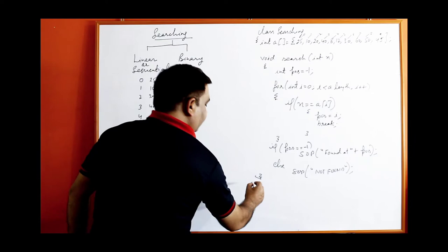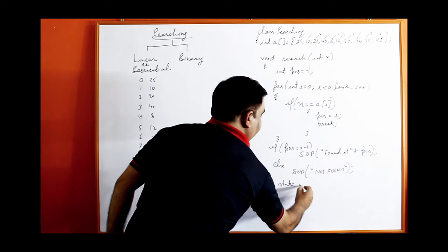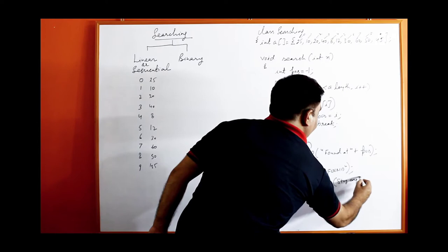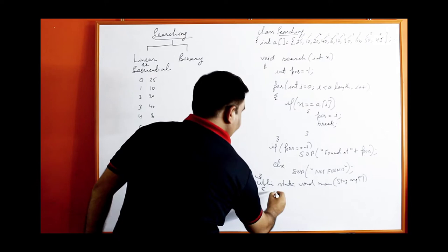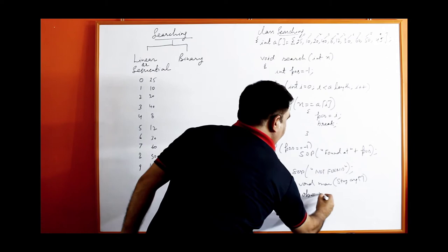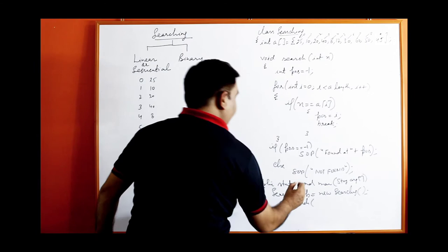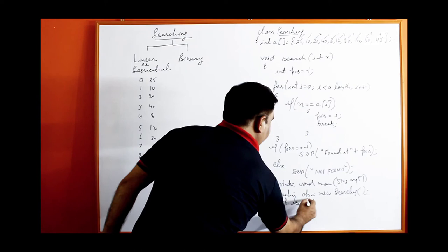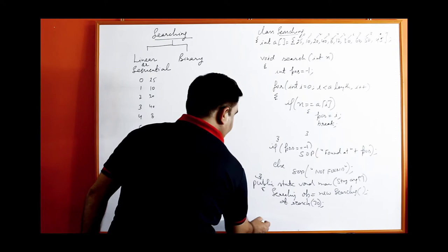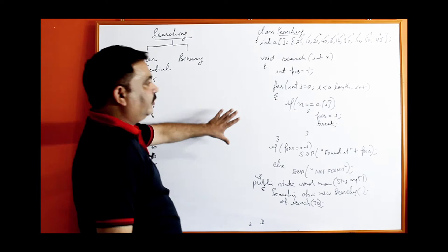Close the search function and make the public static void main function with string arguments. Create the object of the class — I have taken: searching object equal to new searching — and call the function ob.search and pass any value. I am passing here 30.